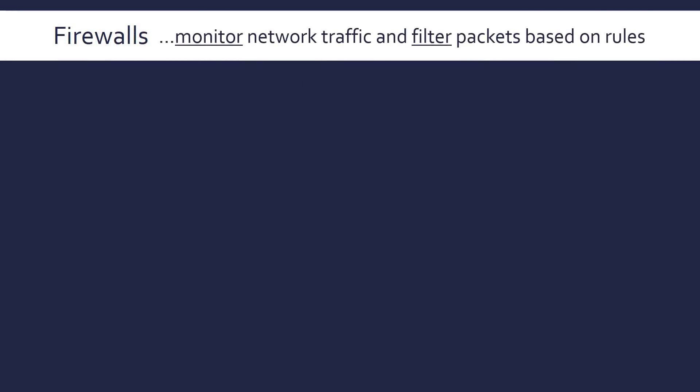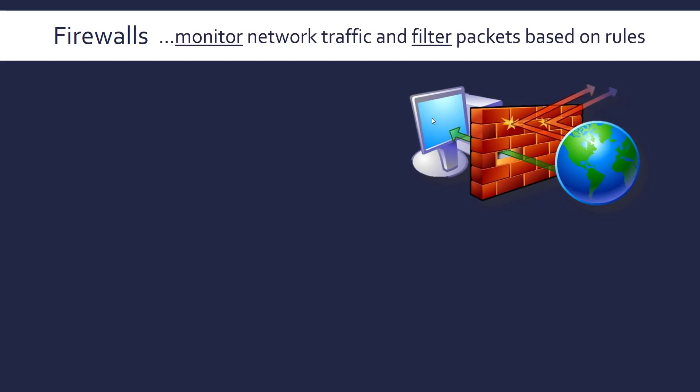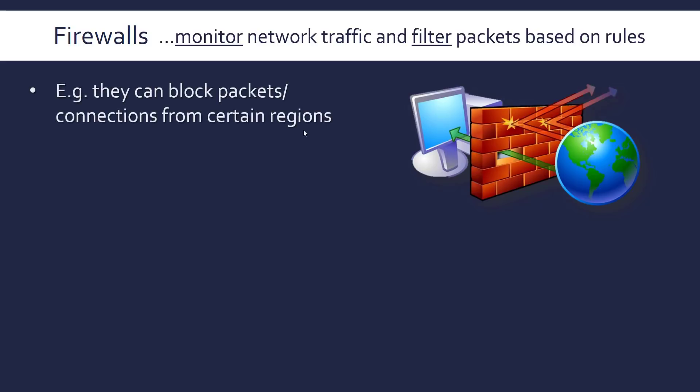Next we have firewalls, which monitor network traffic and filter packets based on set rules. As discussed in the network videos, data is split into individual packets — a small part of each packet is the data, and collectively they form the total data being sent. Firewalls are all about filtering these individual packets, and they can block packets or connections coming from certain regions.